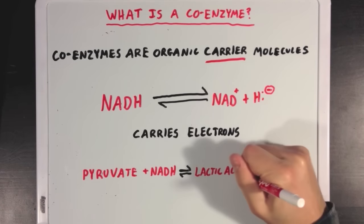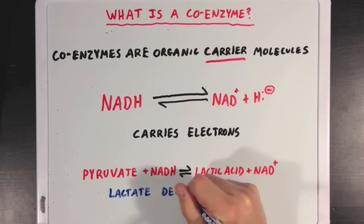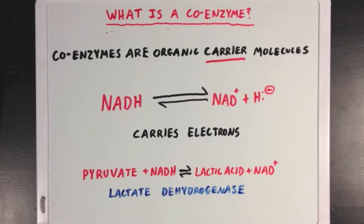Now if you remember the lactic acid fermentation reaction, where pyruvate is converted to lactic acid, you'd see that the enzyme catalyzing this reaction, lactate dehydrogenase, uses NADH as a coenzyme in order to transfer electrons to the pyruvate molecule in order to turn it into lactic acid. And in this sense, NADH is acting as an electron-carrying coenzyme.